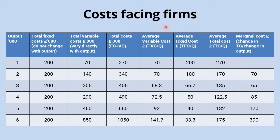Moving on to average costs, there are three different types: average variable cost, average fixed cost, and average total cost. For each one you divide the cost by the quantity of output. Average variable cost is variable cost divided by output; average fixed cost is fixed costs divided by output; and the most commonly used one is average total cost — sometimes just called average cost — which is total cost divided by output. That gives you the average cost per unit of output produced.